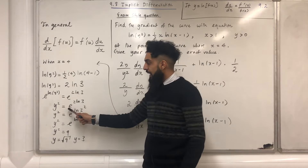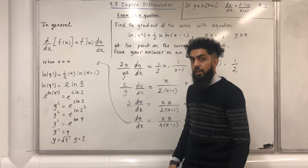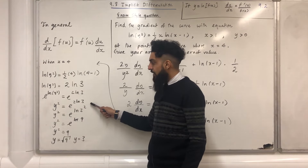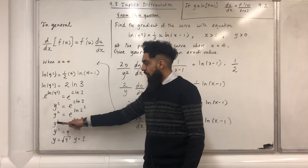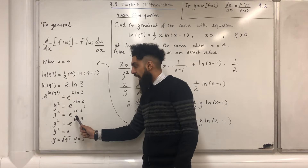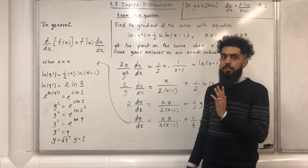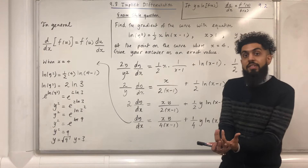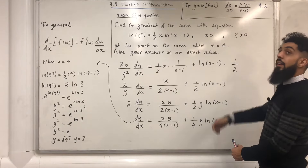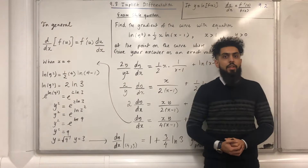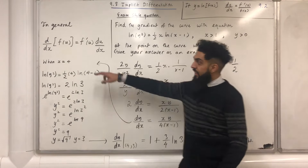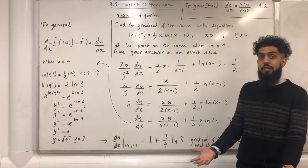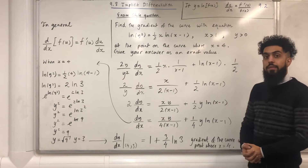I cannot cancel e and ln immediately because of the 2 in front of the logarithm. Using the power rule, I get y squared equals e to the power ln(3 squared), and 3 squared is 9, so y squared equals e to the power ln 9. Cancelling e and ln gives y squared equals 9. Taking the positive square root — because y is greater than 0 — gives y equals 3. Substituting x equals 4 and y equals 3 into dy over dx gives the gradient as 1 plus three quarters ln 3.